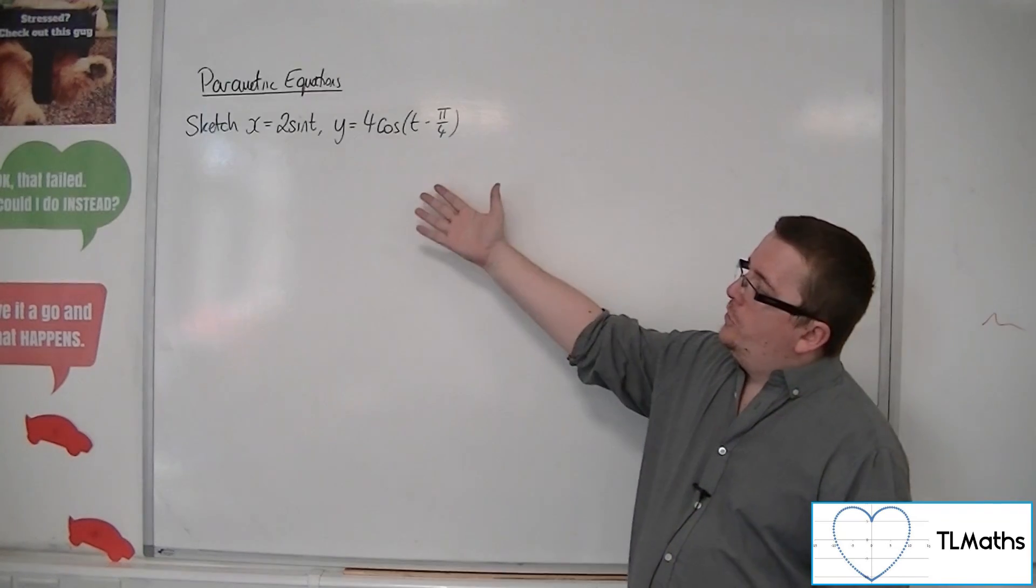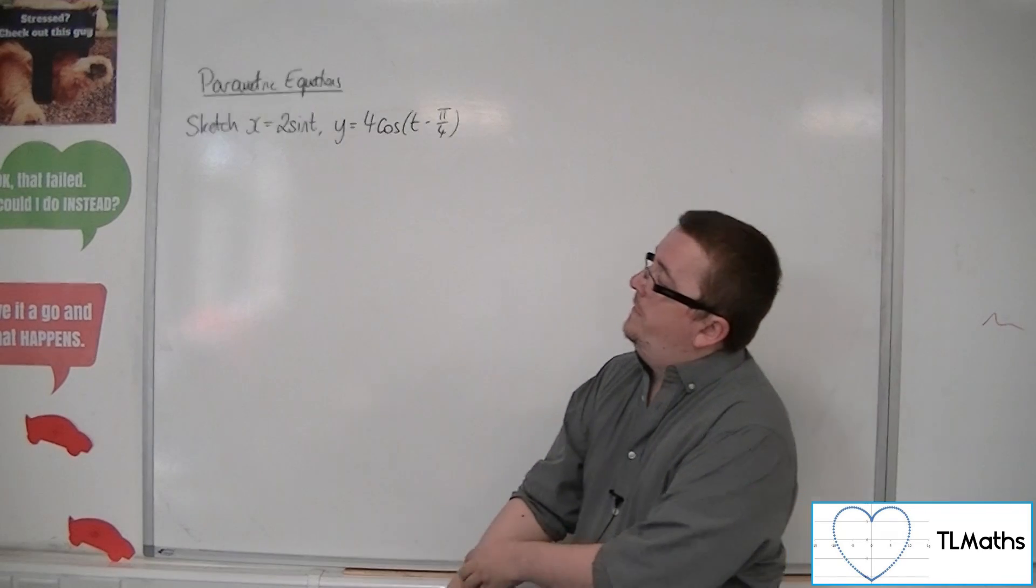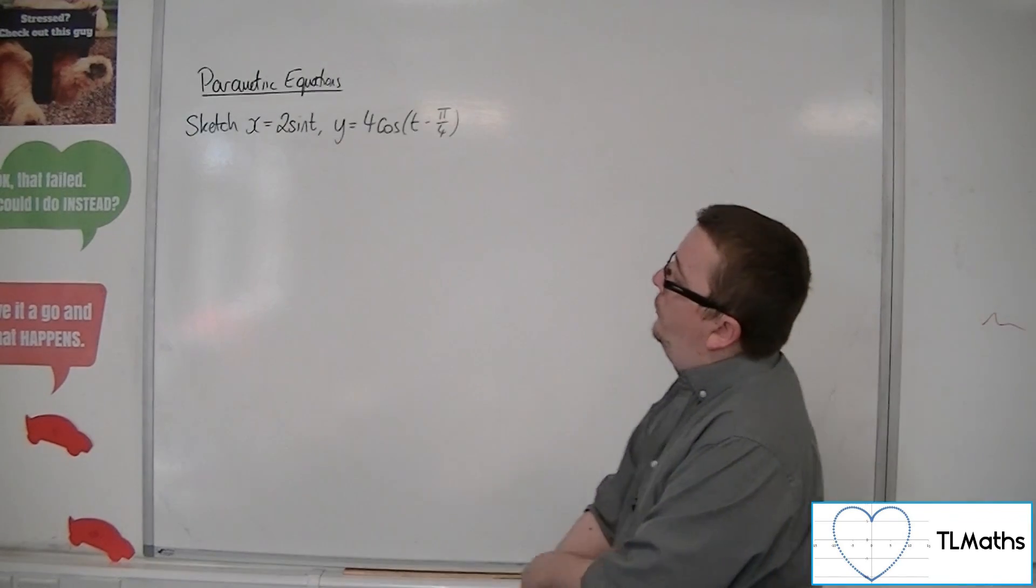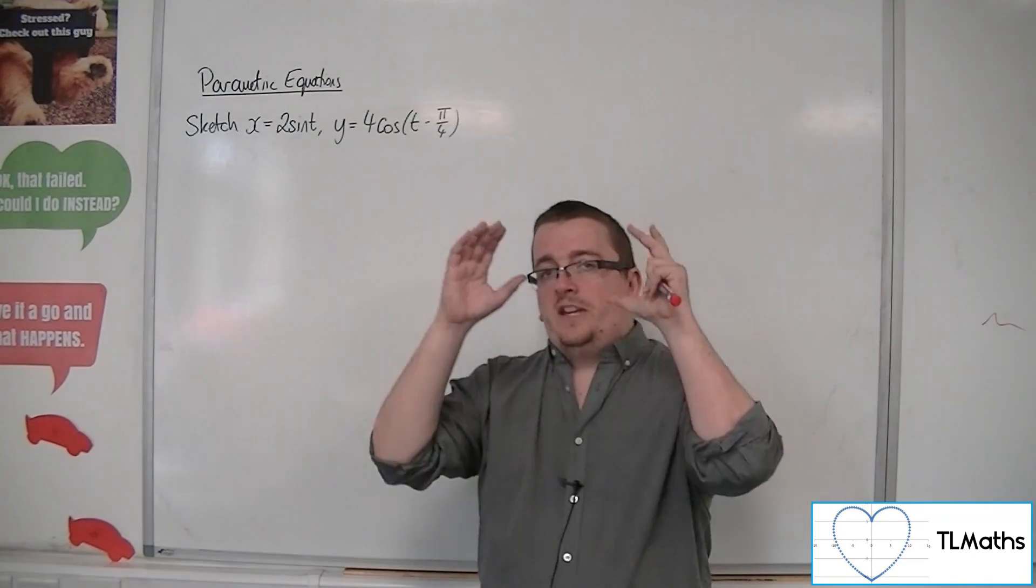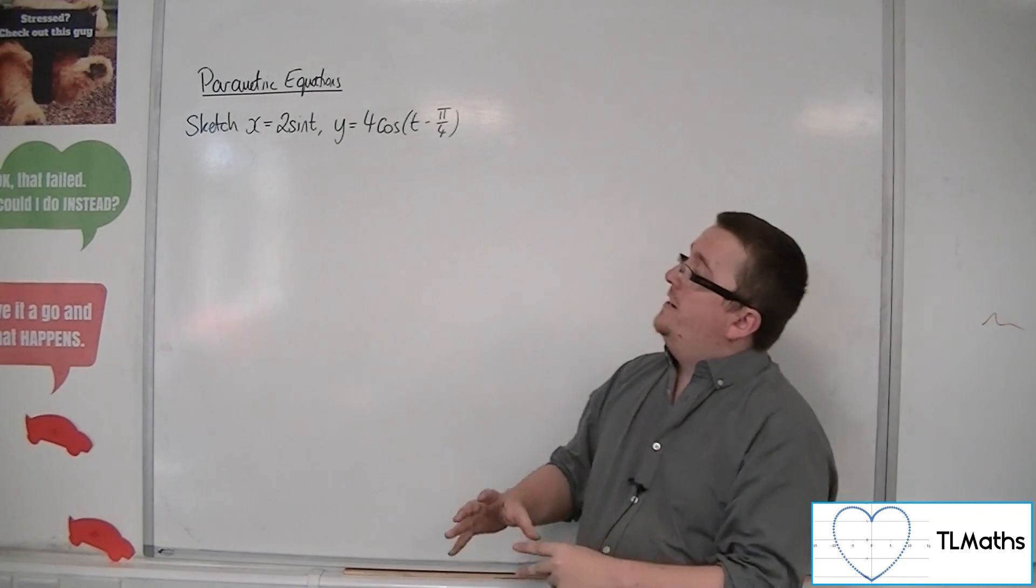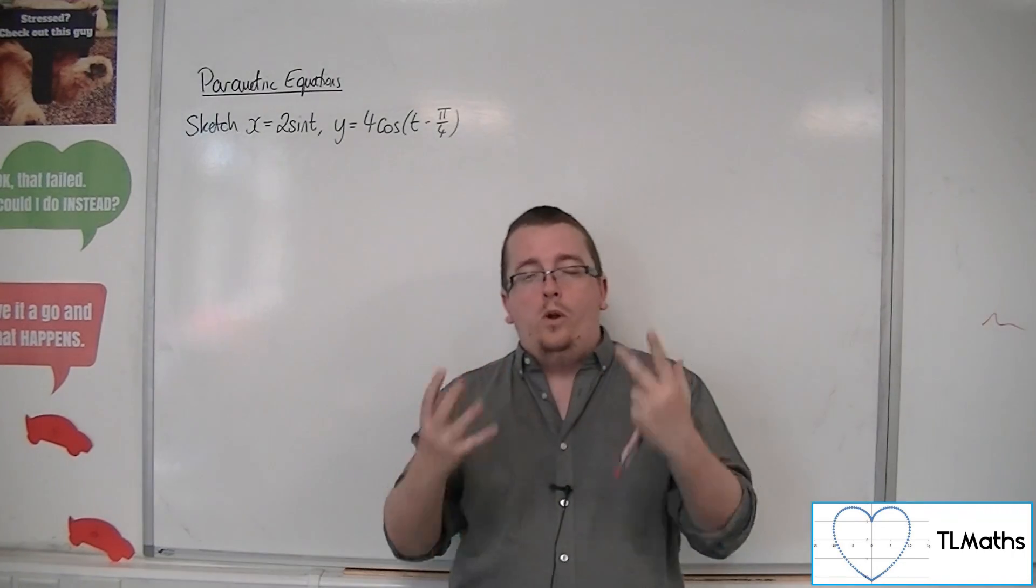So if we were to look at a pair of parametric equations like this: x equals 2 sine t and y equals 4 cos t minus pi over 4. The key to this is really understanding how sine and cosine work.